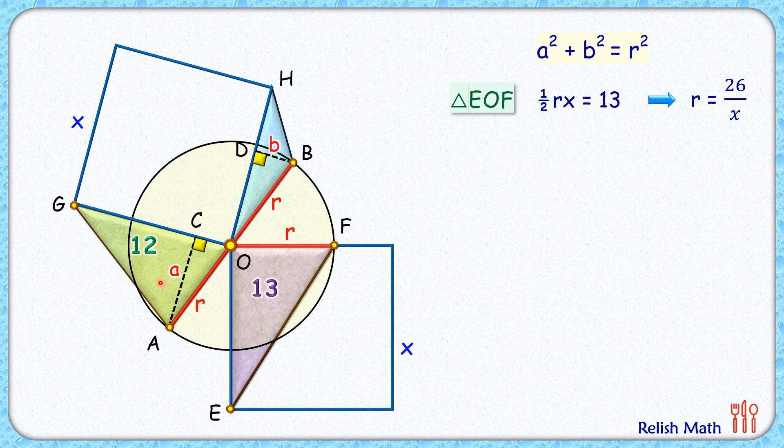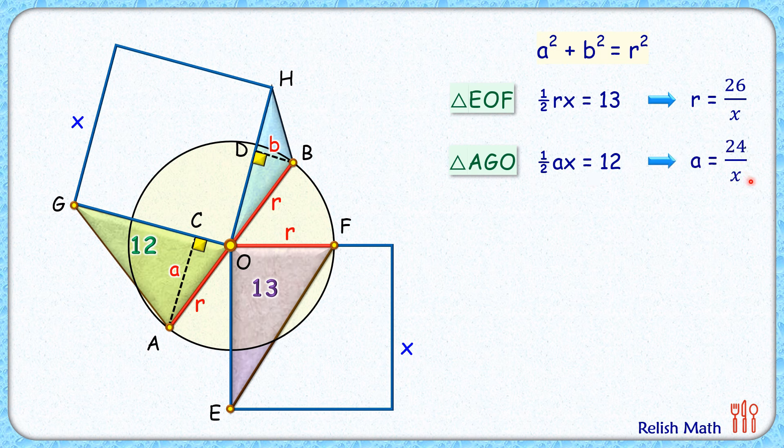Same way for the green triangle. So area will be half of base into height. Base is x cm side of square and height is a cm. So half of a times x is given as 12. Simplifying we'll get a as 24 upon x.